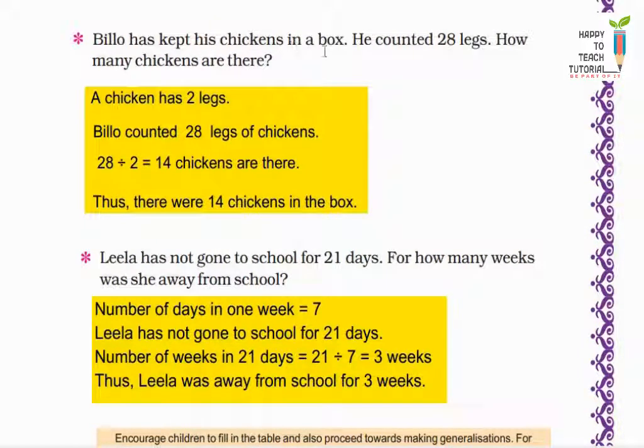Billo has kept his chickens in a box. He counted 28 legs. So how many chickens are there? Billo kept chickens in a box and when he counted, there were 28 legs. So we have to tell how many total chickens are there. As we know, a chicken has 2 legs. And Billo counted 28 legs of chickens. So what will we do? We will divide 28 by 2, which is equal to 14 chickens are there.